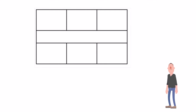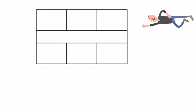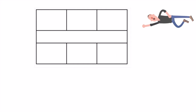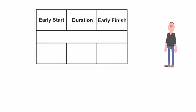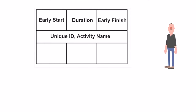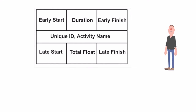Here's how this works. The top row of this box is broken down into three smaller boxes: the early start, the duration, and the early finish. The middle row just represents the activity name and a unique identifier. And the bottom row is broken down into the late start, total float, and late finish.